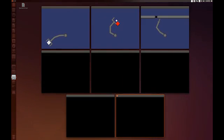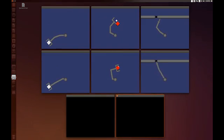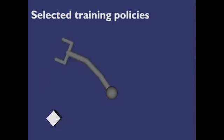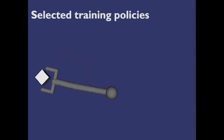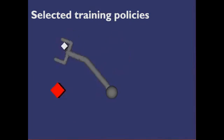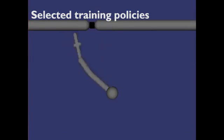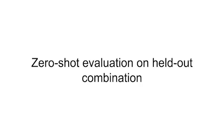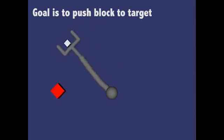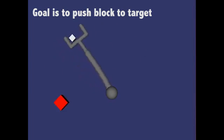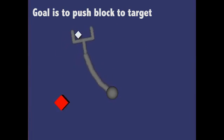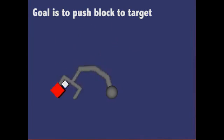Here is the set of all the robot-task combinations that we train on. We test zero-shot performance on the four-link robot pushing the block after training on all other robot-task combinations. The goal of this task is to push the white block to the red target. This is the performance of the random policy. This is the performance of a policy which uses the reaching task module instead of the pushing task module. Our method is able to perform the task zero-shot.